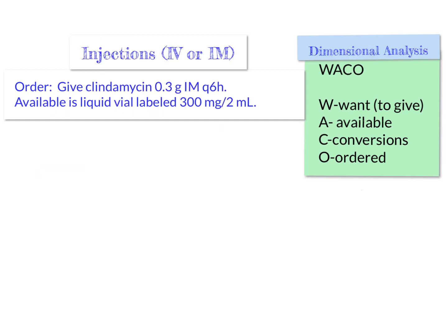Now we'll look at how to give injections, whether IV or IM — intramuscular injection. This order says give clindamycin 0.3 grams IM every 6 hours. Available is a liquid vial labeled 300 milligrams per 2 mL. We have to decide how much of this vial to pull out and give to our patient. We start with what we want: mL, because we're giving a liquid.